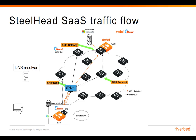Once Akamai receives the SYN packet, it will verify whether there is any existing mapping for this combination of client and server IP addresses. If there is already an existing mapping, Akamai will send this SYN to the appropriate Akamai Cloud Steelhead. If there are no mappings between the client and the server, Akamai will calculate the most optimal region to send this traffic to and redirect the SYN packet to that region.